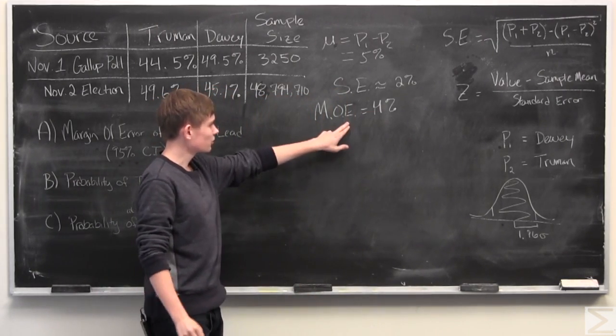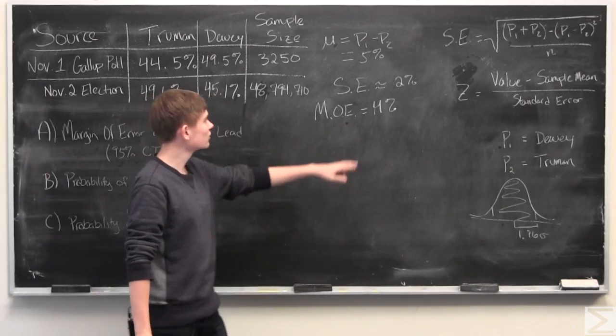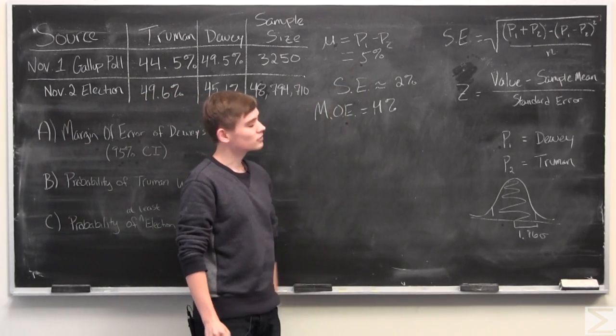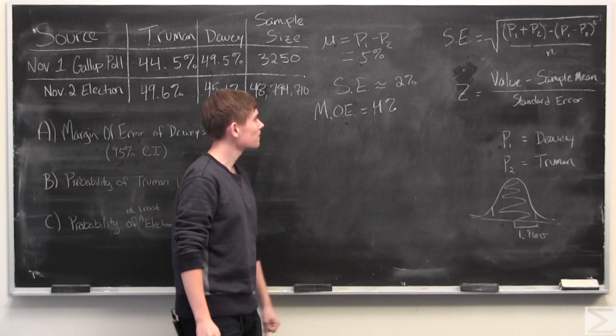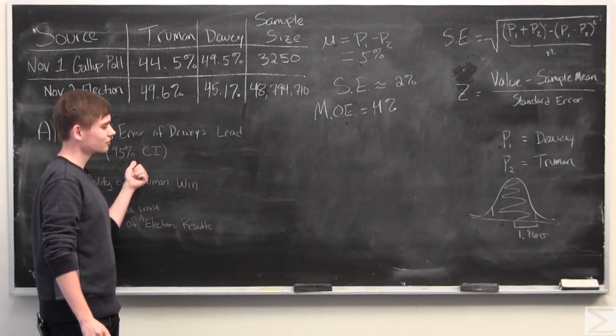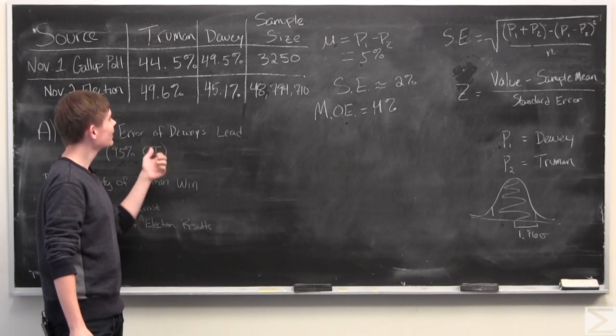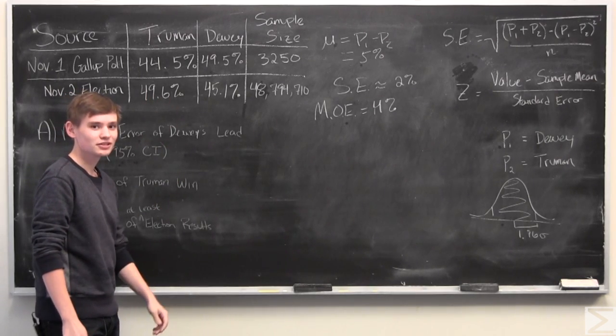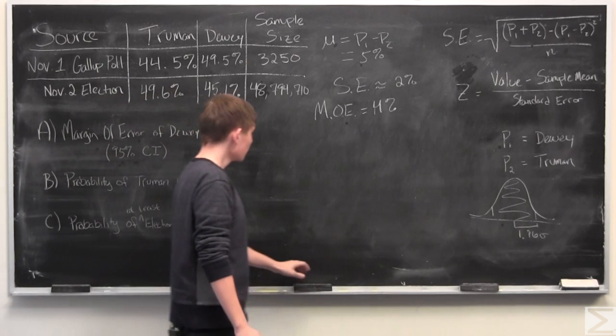And since our margin of error is 4%, and the sample mean is 5%, that means that we are very certain that Dewey is going to win this election.